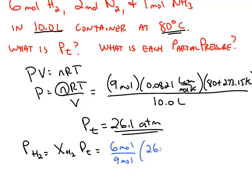And then the total pressure, 26.1 atmospheres. Notice the mole fraction is a unitless number because the mole cancels with the mole. 6 ninths of 26.1 works out to be 17.4 atmospheres.